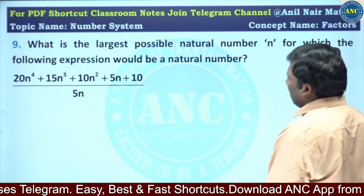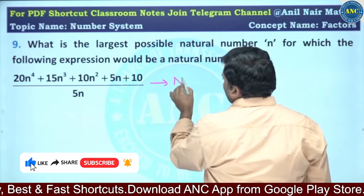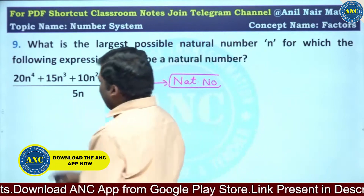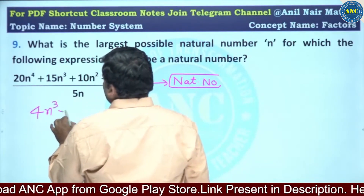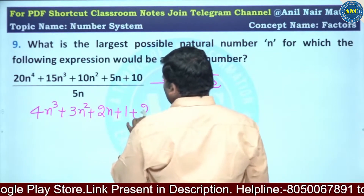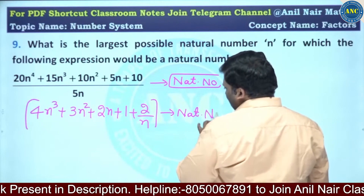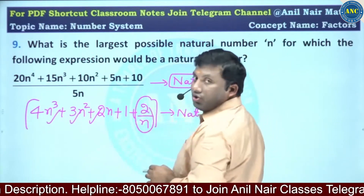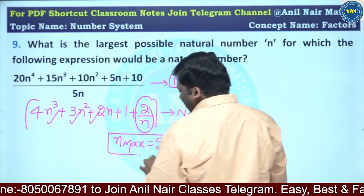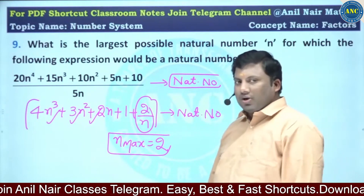What is the largest possible natural number for which the following expression gives a natural number? Dividing through by 5n: 20/5 = 4n³, 15/5 = 3n², 10/5 = 2n, 5n/5n = 1, and 10/5n = 2/n. For the result to be a natural number, 2/n must be a natural number, so n must divide 2. The maximum natural number n can take is 2.